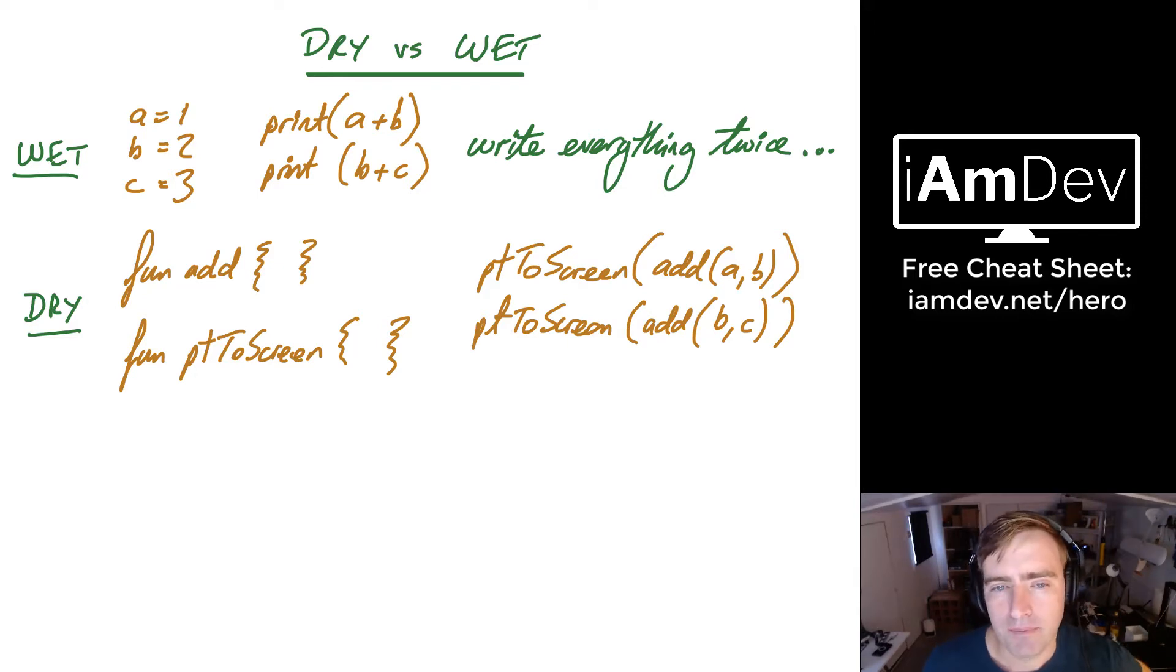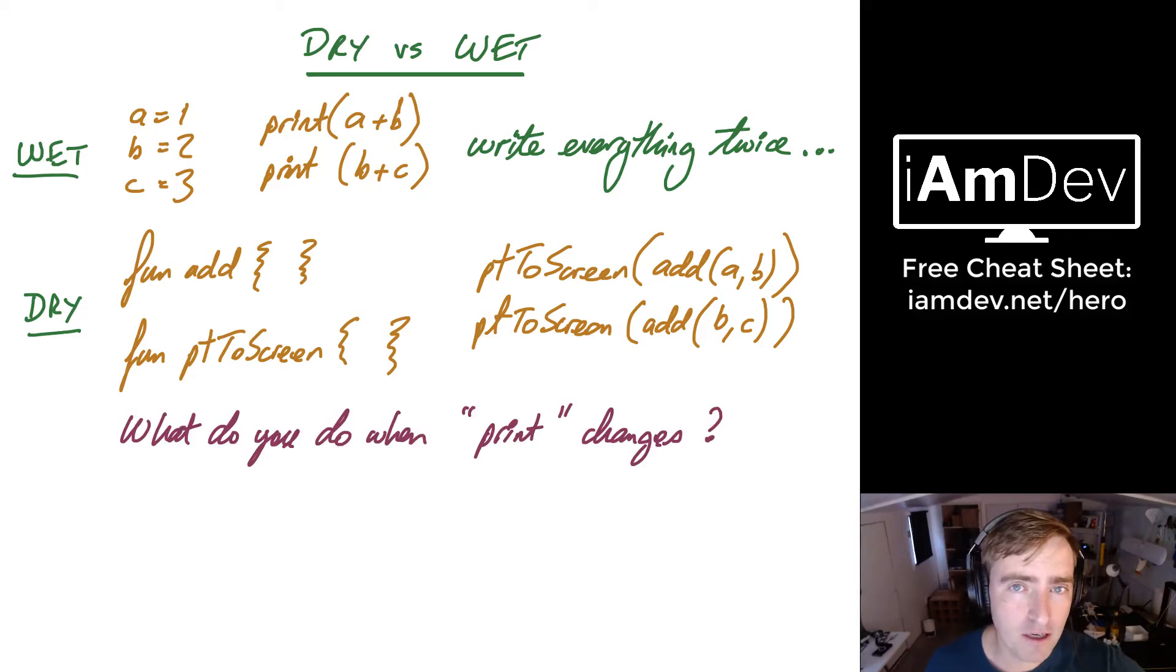But I'm going to ask you a question. What do you do when the function name print changes? Let's say you have 100, 200 print statements in your application and it changes to println. What do you have to do now? You have to go through the entire thing and change it absolutely everywhere. That's why we use the DRY principle, or at least one of the reasons.